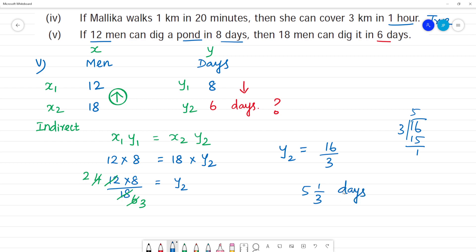5 and 1/3 days - that 1/3 is what hours. So multiply by 1 day is 24 hours, we get 8. So this is 5 days, 8 hours. 1/3 of the day is 8 hours. So here 6 days is not the answer - we get 5 days 8 hours. So this is false.